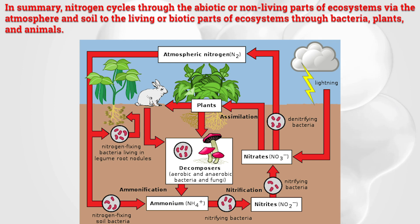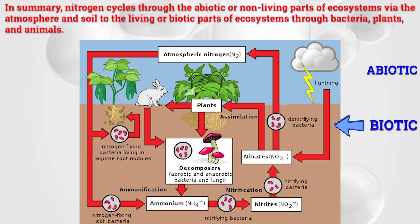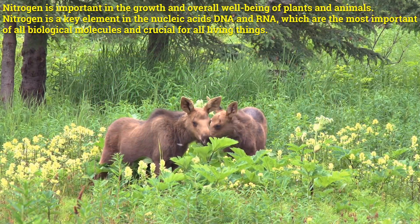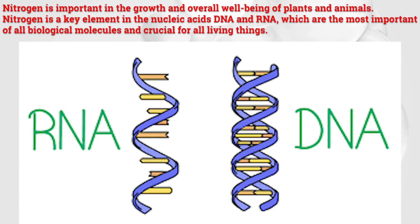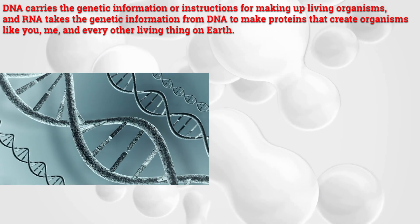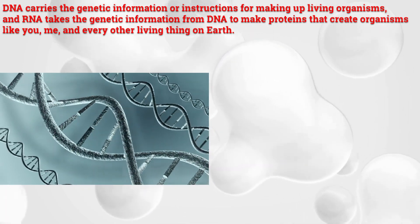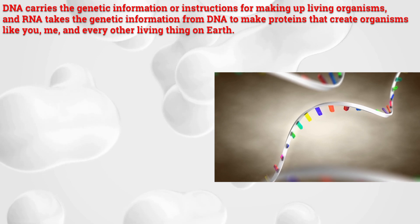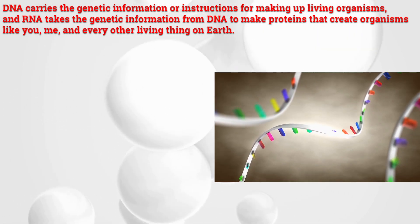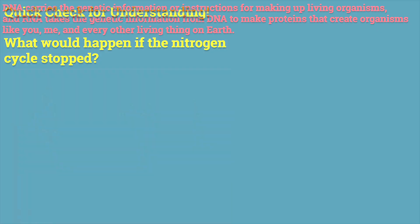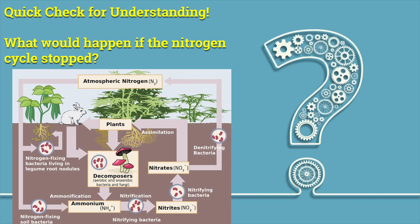In summary, nitrogen cycles through the abiotic, or non-living, parts of ecosystems via the atmosphere and soil, to the living, or biotic, parts through bacteria, plants, and animals. Nitrogen is important in the growth and overall well-being of plants and animals. Nitrogen is a key element in the nucleic acids DNA and RNA — DNA carries the genetic information for making living organisms, and RNA takes that information to make proteins that create every living thing on Earth. Quick question: what would happen if the nitrogen cycle stopped? Pause the video and take two minutes to respond.